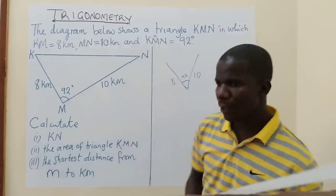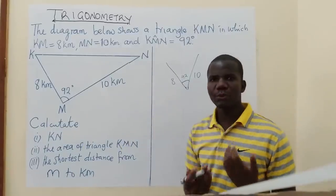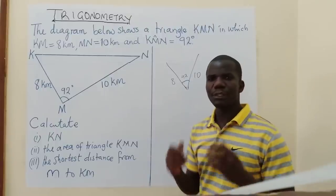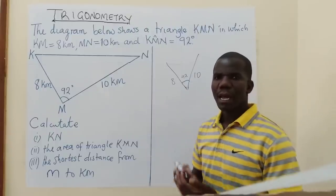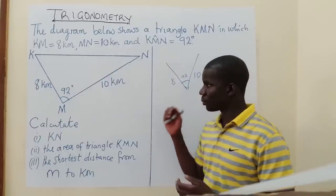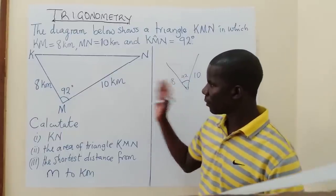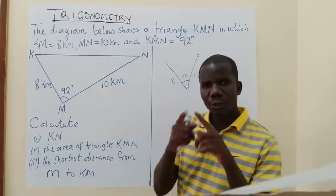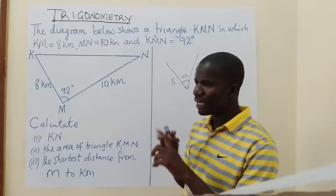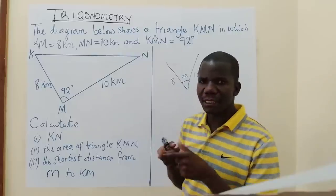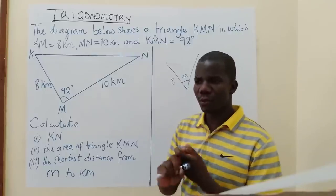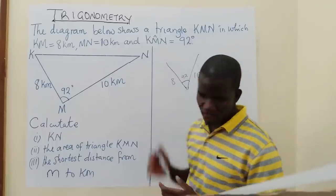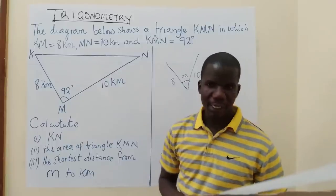I'm trying to help you understand how to determine which rule to use between sine rule and cosine rule. For cosine rule: you are given two sides and one angle, and at the point where those two sides are meeting, that is where you have the angle. Then you must know that you are using cosine rule. This is what we are going to apply in this case.